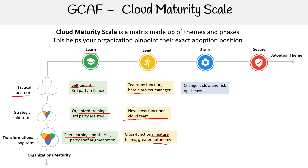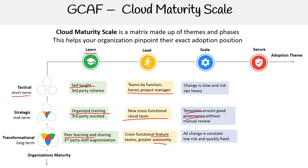That's because basically everything is still in the old on-premise system. For Scale and Strategic, templates ensure good governance without manual review — you want to make sure infrastructure as code is in place and you're putting governing rules in the midterm. For Transformational Scale, all change is constant, low risk, and quickly fixed, so you're really in good shape. Scale is going to be really easy, as you're doing a lot of automation to get your scale.